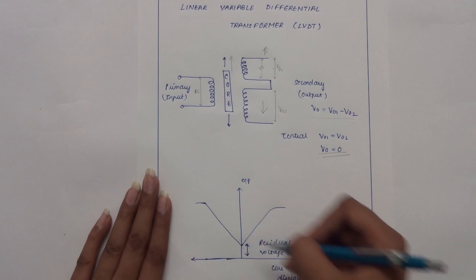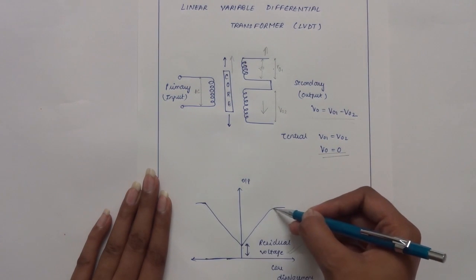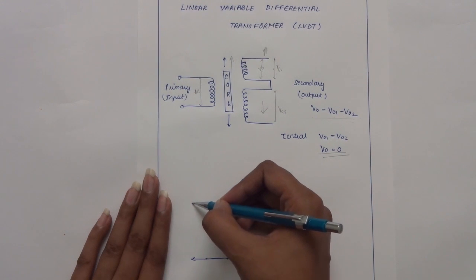The output voltage produced by the displacement of the core is linear over a considerable range, but it flattens out at both ends.